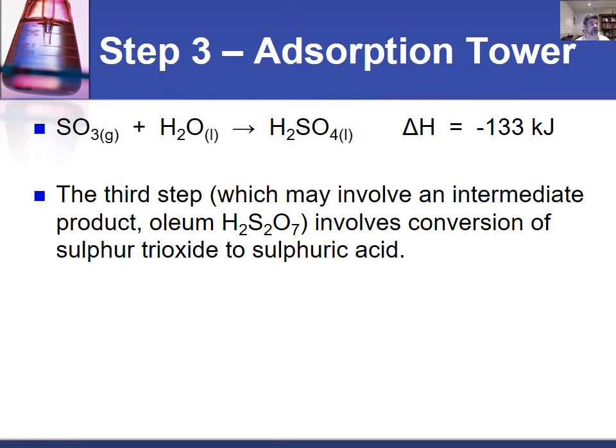Once the sulphur trioxide forms it can be dissolved in water droplets in order to form sulphuric acid. The problem with this step is that the mist that forms may be very difficult to separate from the sulphur trioxide gas. So when we get these two things mixed together it can be quite difficult to separate them. We also know that this is a bit of a problem in terms of its corrosive nature.